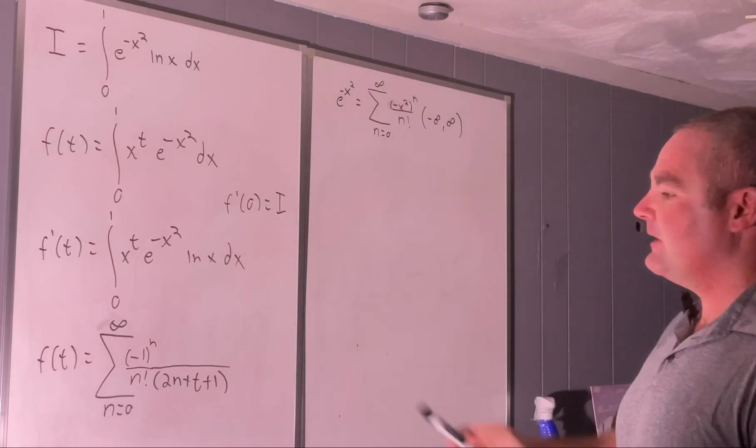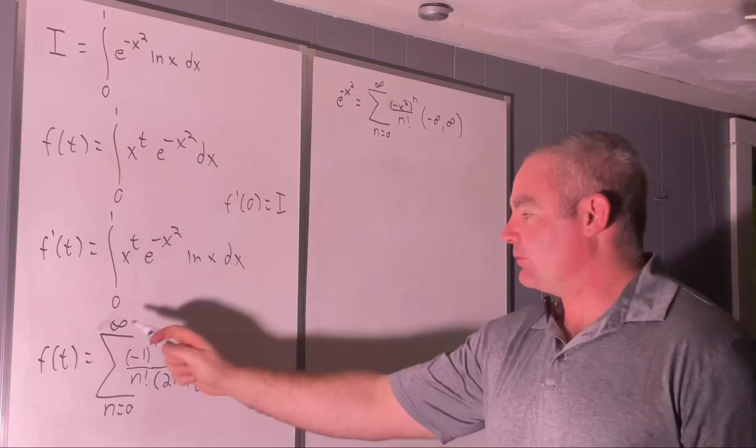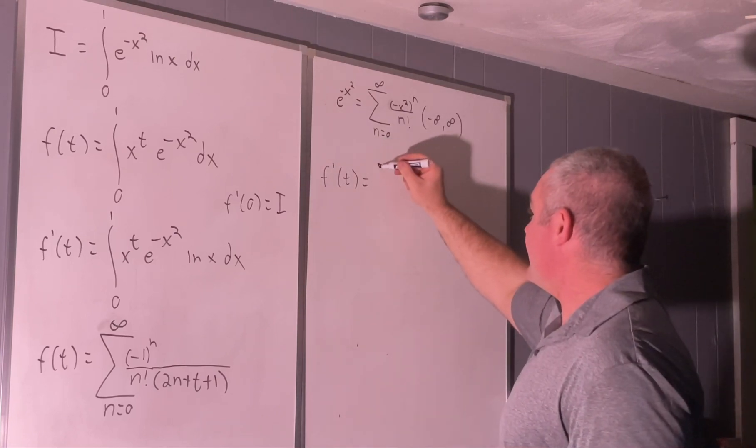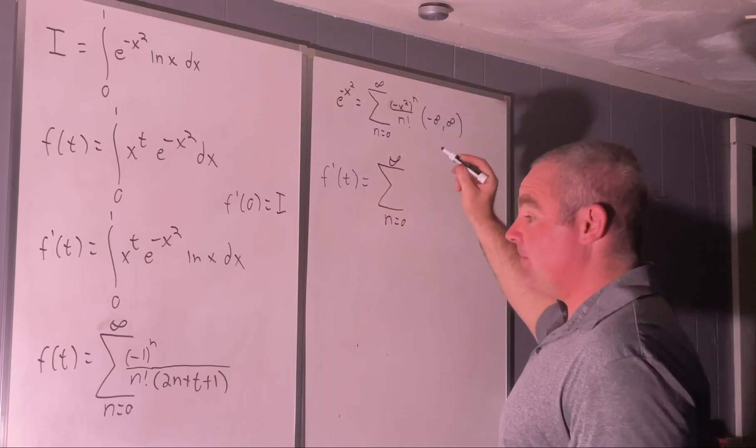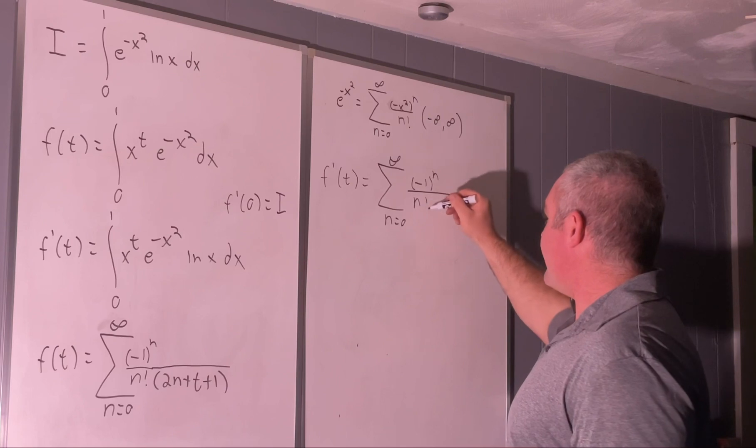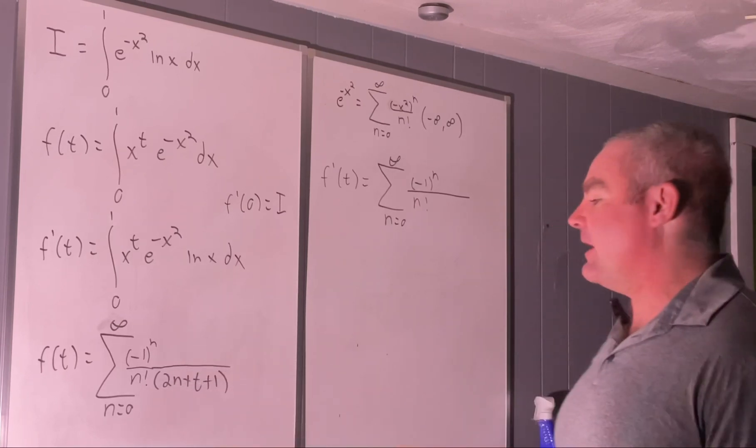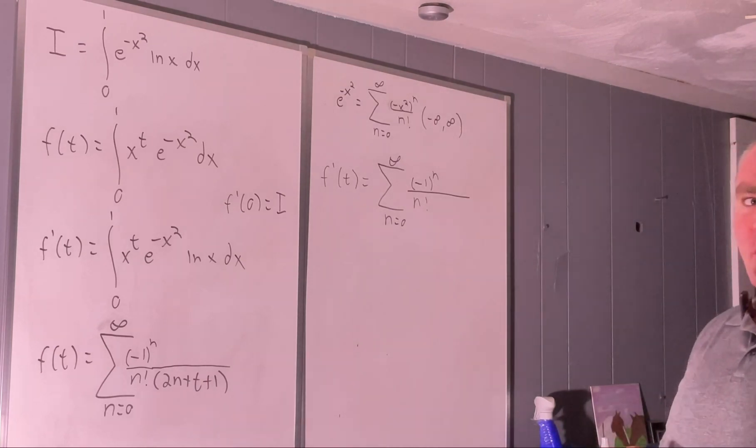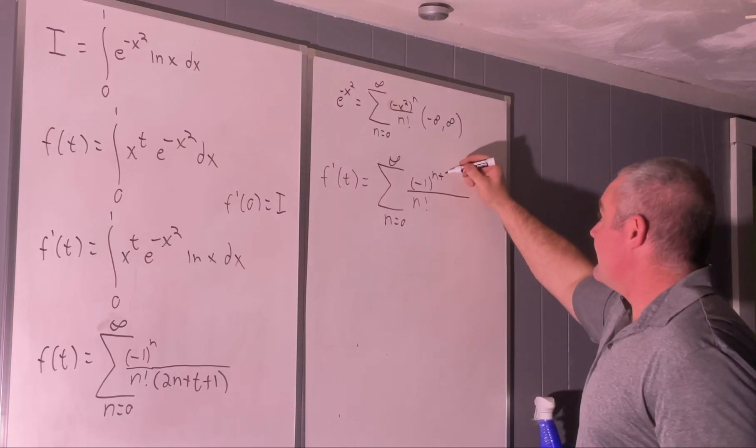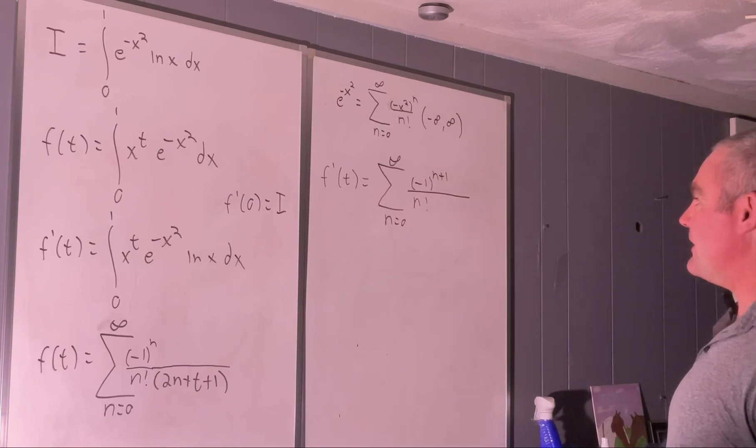Now we have our f of t, but we need f prime of t, because that's what we're going to be evaluating at the point 0 to get i. So let's just take a derivative with respect to t. So f prime of t is equal to the sum from n equals 0 to infinity of, let's see, we'll still have negative 1 to the n over n factorial. But now we need to take the derivative with respect to t of 1 over 2n plus t plus 1. And that would give us negative 1 over 2n plus t plus 1 all squared. So we'll take care of that negative sign by just adding a 1 in front of that n on the exponent on negative 1, and that would switch the sign.